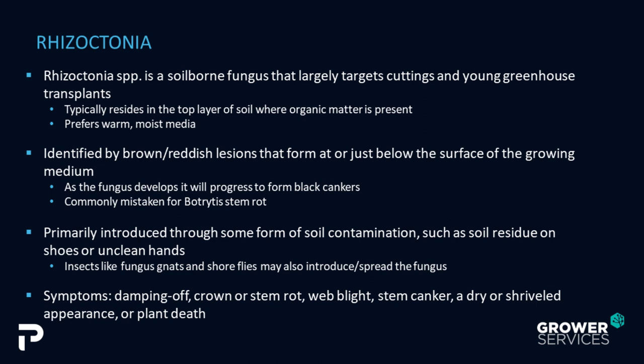When we talk about Rhizoctonia, plants like azalea, begonia, ferns, holly, and impatiens are some of the most common plants that Rhizoctonia targets. Symptoms include damping off, crown and stem rot, and web blight – one of the ways to easily identify this compared to Fusarium. If you see brown and reddish lesions plus web blight, you probably have Rhizoctonia. Web blight is caused by the organism's hyphae forming, growing, and stretching to produce a webbing-like effect on your plant. It will also have a dry or shriveled appearance and can ultimately cause plant death.